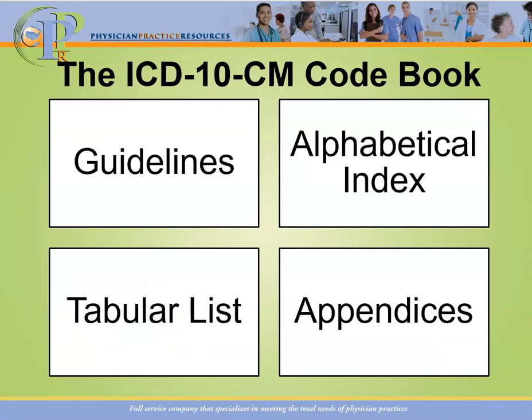The first thing you should know is that the ICD-10 code book, or coding manual as some of us refer to it, is essentially divided into four parts. You have the guidelines — the official guidelines for coding and reporting. You have the alphabetical index, which is divided into four parts. We have the tabular list, which is divided into 21 chapters, and then we have the different appendices.